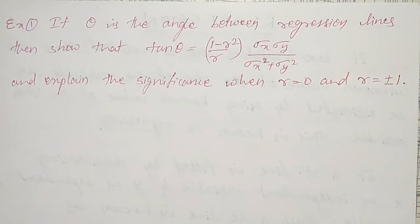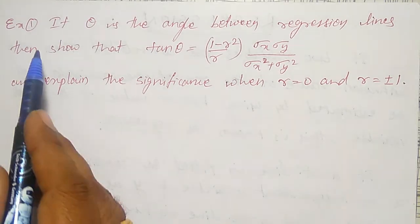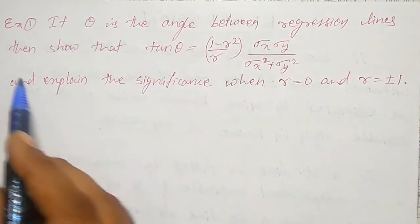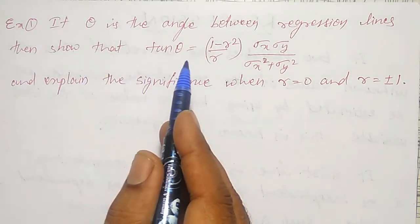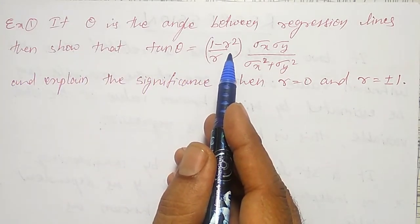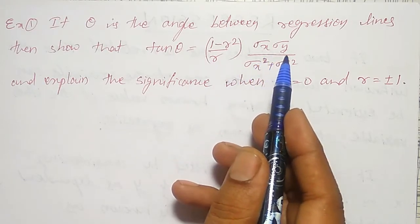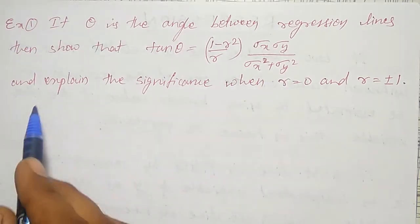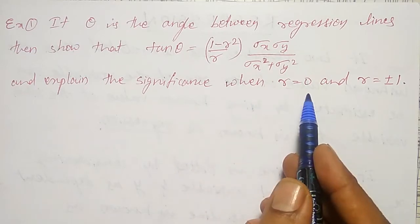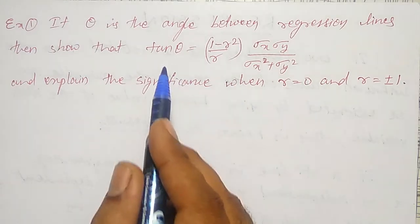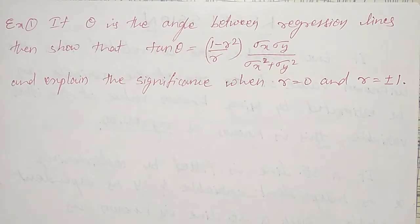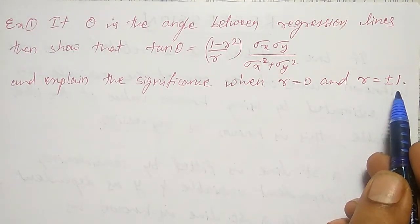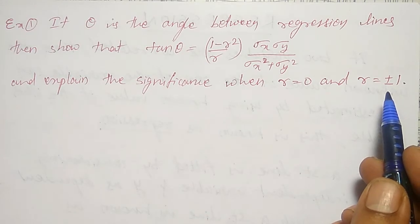In this video, I am going to discuss the relation between regression lines — regression line x on y and y on x. That is, if theta is the angle between regression lines, then show that tan theta equals 1 minus r squared divided by r, into sigma x sigma y, whole divided by sigma x squared plus sigma y squared. I have to prove this, and then explain the significance when r equals 0 and when r equals plus or minus 1.